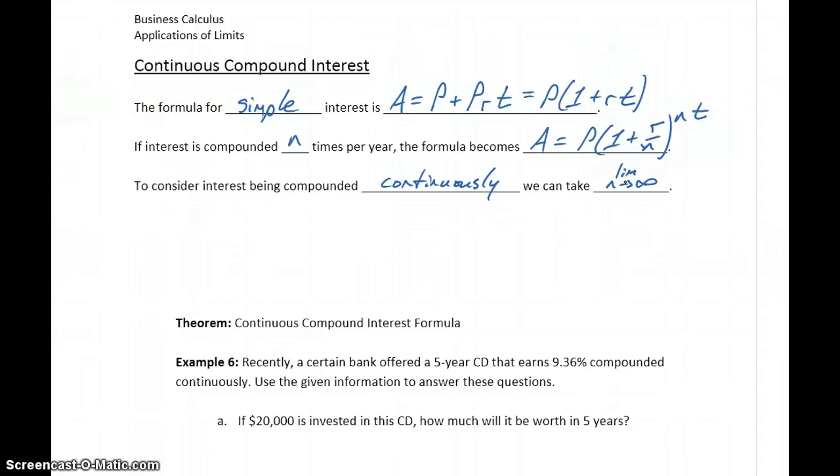So this is going to lead us to a result that we've seen before, but now using this knowledge that we have for limits, we can use those to actually derive this formula for continuously compounded interest. So what we're saying is we want to take the limit as n approaches infinity of P times 1 plus R over n raised to the nt power.